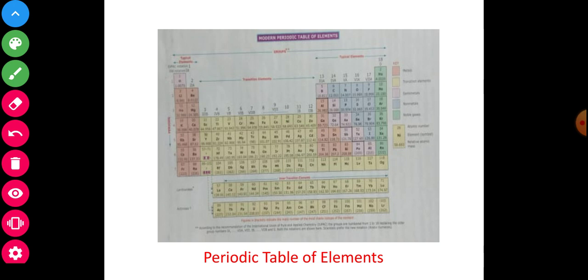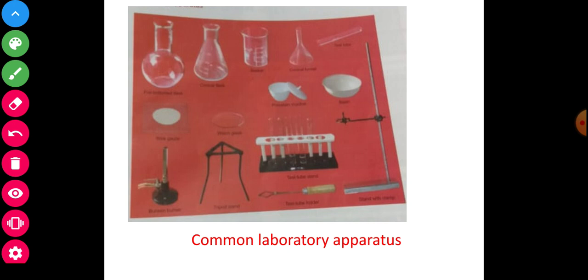Now students, here you will see a picture: periodic table of elements. Observe at home carefully and read. Next time I will give an explanation about the periodic table of elements. Also, you will observe this picture already given in your book: common laboratory apparatus. So you will observe and read. Next time I will explain. Thank you students, thanks.